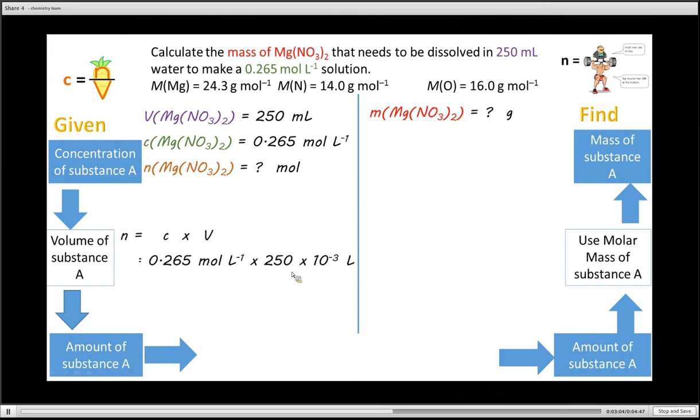Now notice my quick shortcut I've done to change from milliliters to liters. I have simply multiplied by 10 to the minus 3. That is the same as dividing by 1000. Remember one milliliter is smaller than a liter. So if you are changing from milliliters to liters, the number must become smaller. And that is my amount in moles. So I use this now on the right hand side, my amount in moles.